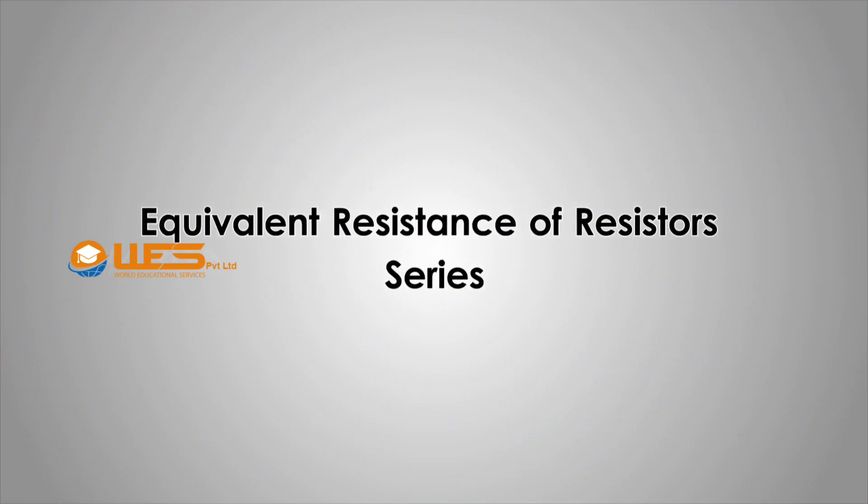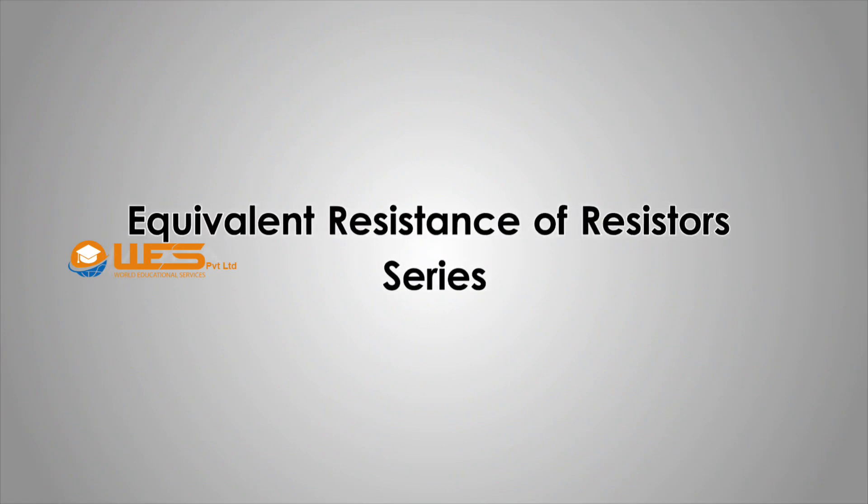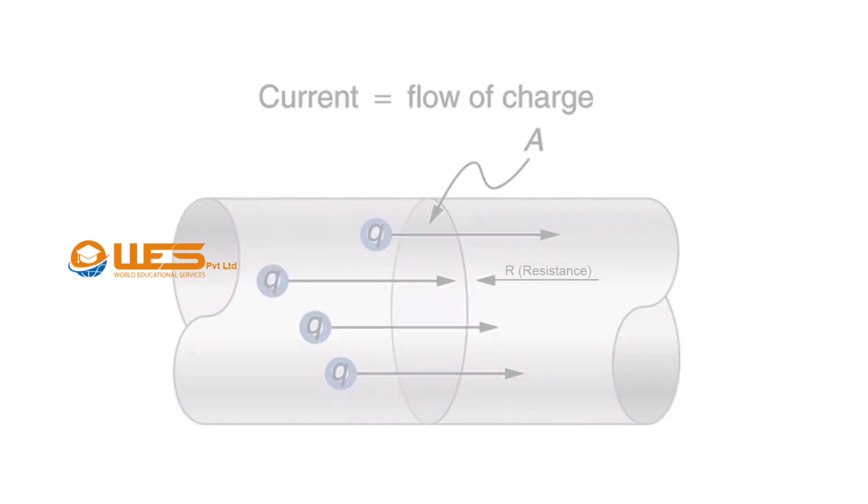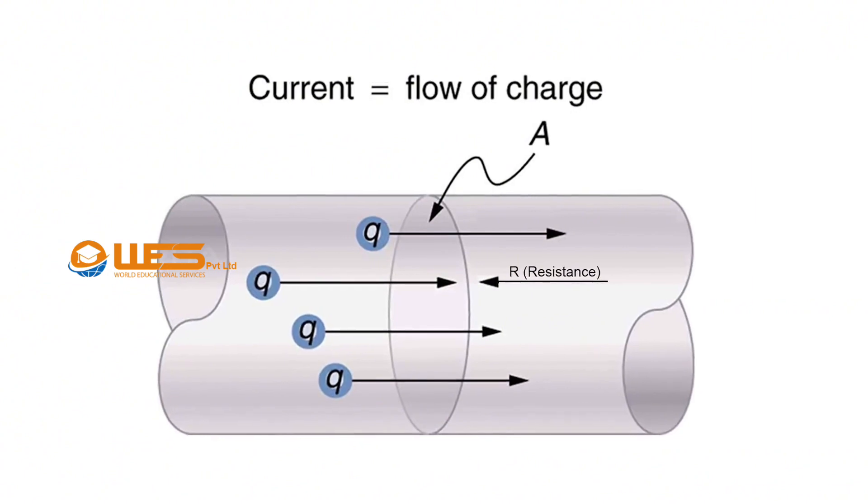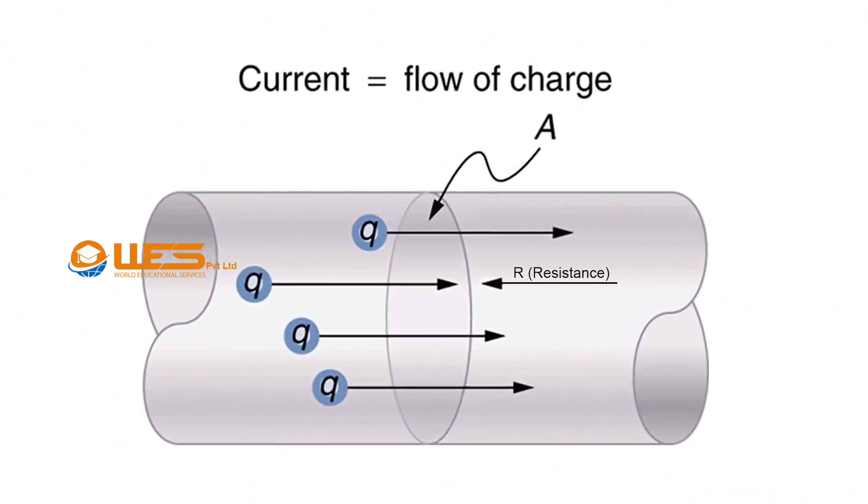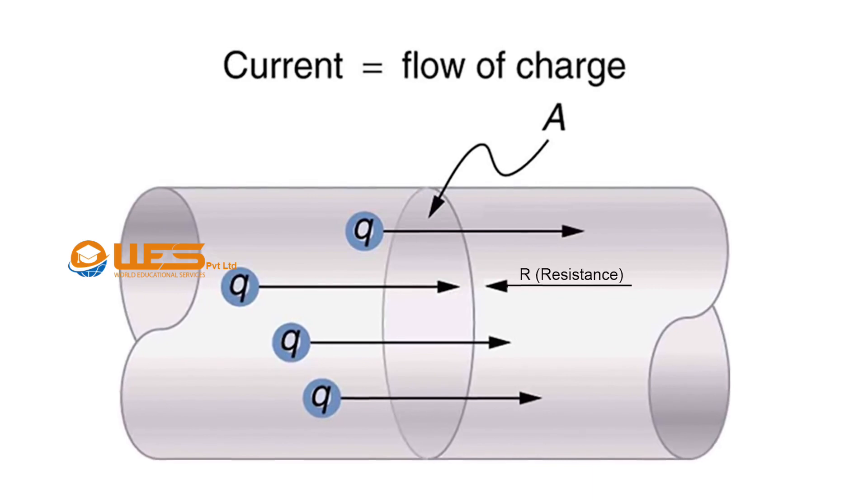Equivalent Resistance of Resistors in Series. The property of a conductor to oppose the flow of charges through it is called resistance.